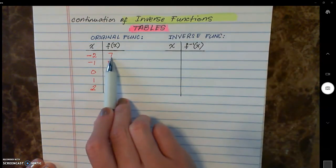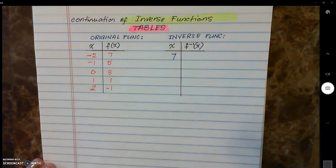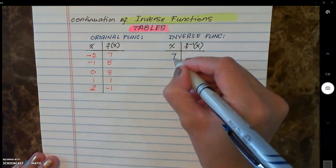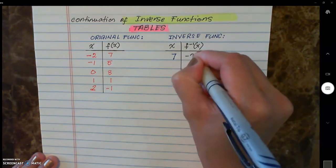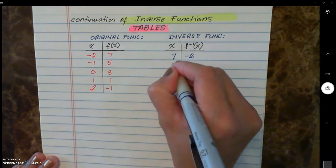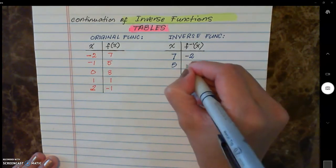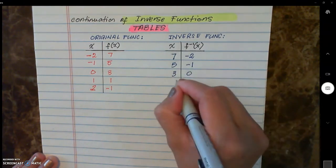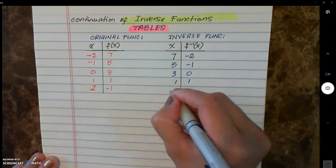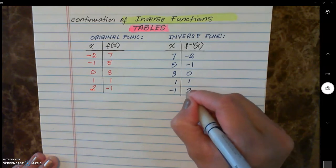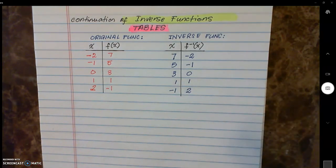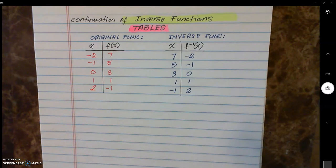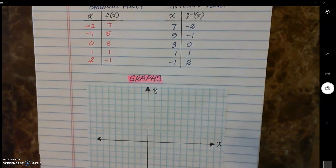For example, my output of 7 now becomes my input. So input 7 yields output negative 2. Input 5 yields output negative 1. Input 3 yields output 0. Input 1 yields output 1. Input negative 1 yields output positive 2. Notice that it's the same pairing, but you have switched the x and y values — and that is the inverse from a set of points.